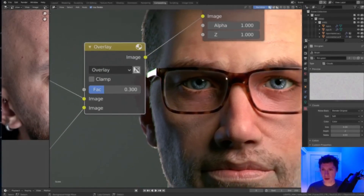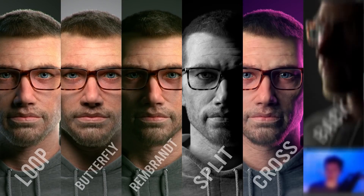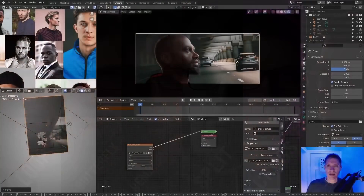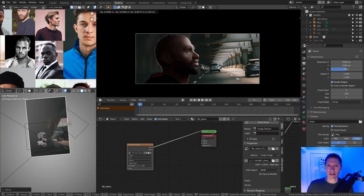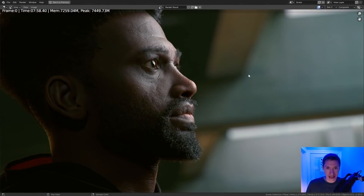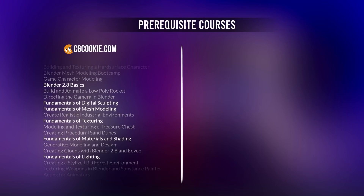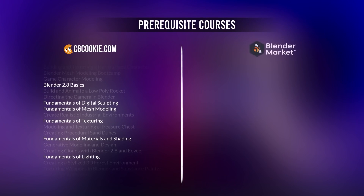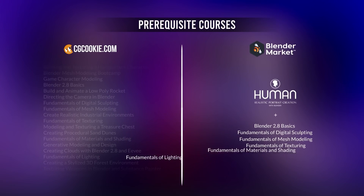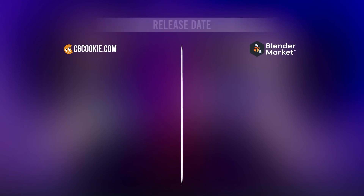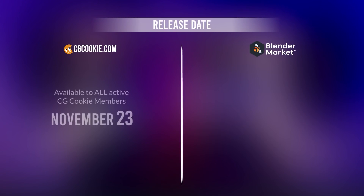If you want to learn this, you can pre-order right now — when it comes out it will be significantly more expensive. If you get the course bundle, you'll get Human plus 6 prerequisite courses that will guide you all the way to creating anything in Blender and becoming a professional 3D artist.